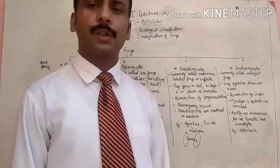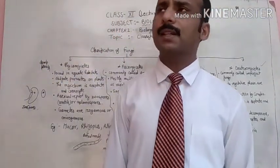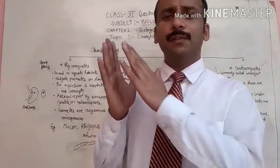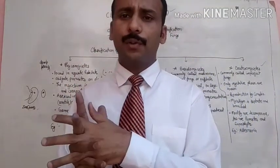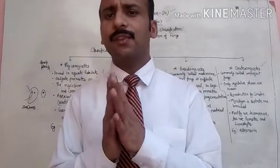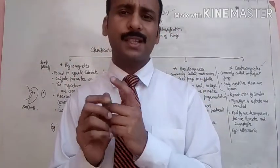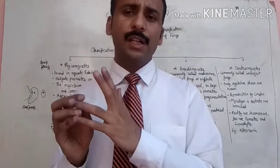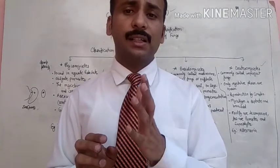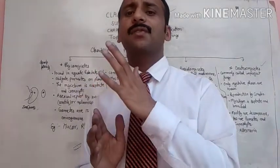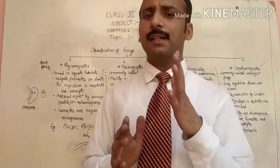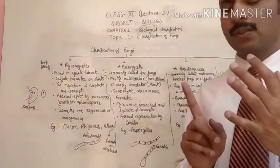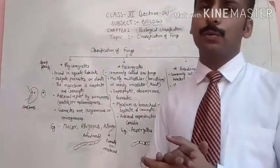Hope this topic is clear. This was the classification of fungi. When organisms are classified into five kingdoms — Monera, Protista, Fungi, Plantae, and Animalia — we discussed today kingdom Fungi specifically. The fungi are categorized into four groups: Phycomycetes, Ascomycetes, Basidiomycetes, and Deuteromycetes.